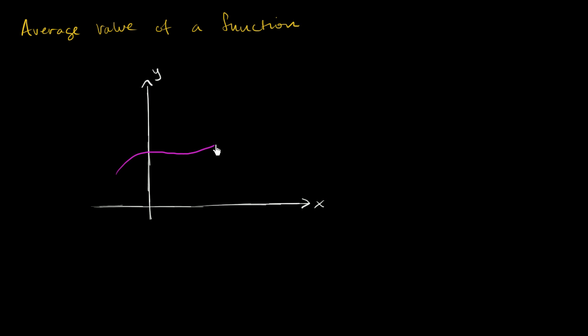So let's say the function looks something like that — that's the graph of y is equal to f of x. And now let's think about a closed interval. We're going to think about the closed interval between a and b, including a and b.